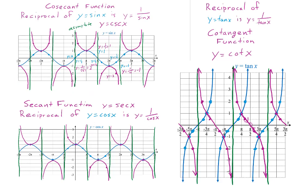This is called the cotangent function. It's written cot x. Sine, cosine, and tangent, together with their reciprocals — cosecant, secant, and cotangent — form the six trigonometric functions.